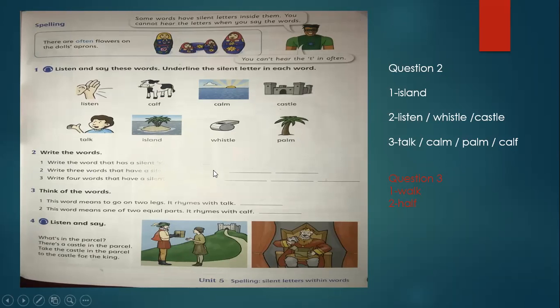Write four words with a silent L: palm, calm, and walk. This word means to go on two legs, and the scene or that rhyme with talk - the rhyme with talk, talk and walk. So can work rhyme. This word meaning one of two equal parts - it rhymes with cough, cough and half.